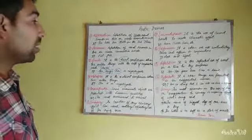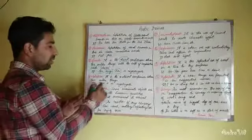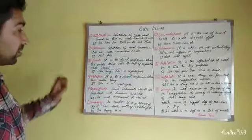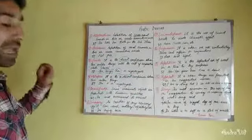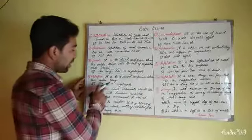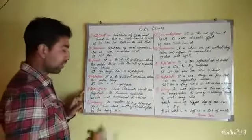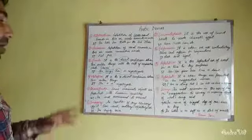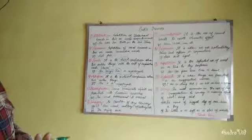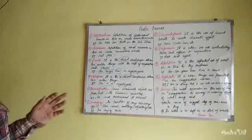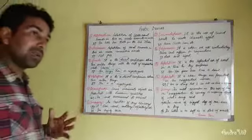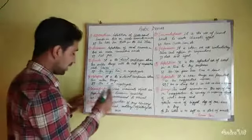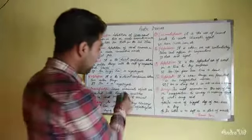Metaphor is an indirect comparison between two unlike things. It differs from simile in that there is no comparative word. For example, instead of saying she sings like a nightingale, we say 'She is a nightingale.' There is no 'like' or 'as,' making it an indirect comparison — we can't specify exactly what aspect makes her a nightingale, so it is a metaphor.